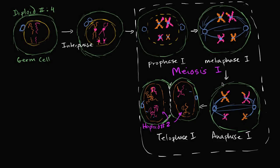In the last video, we had completed meiosis one, and now we're ready to go into meiosis two. After mitosis, we went back into interphase. Is there a rest period between our two phases of meiosis? The answer is sometimes. There can be a rest period where you have an interphase two. That will depend on the type of cell and the species and all of that, but it is possible.